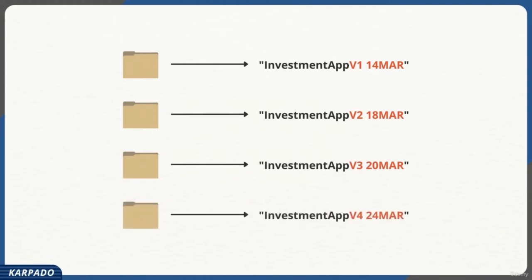Every time a new feature or a chunk of code was introduced, Sundar would simply copy the folder and make the necessary changes. So if Bob complained that v4 was not working as expected and wanted to go back to v3, Sundar could just remove the v4 folder from the server and replace it with the v3 working version. Or if Bob insisted on fixing the bug, Sundar could compare the files between v3 and v4 using a tool like Beyond Compare to pinpoint exactly what changed.